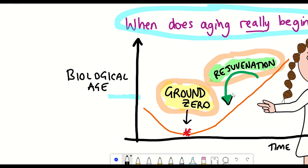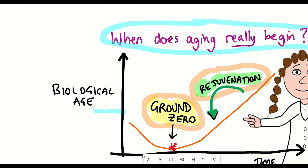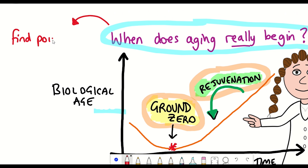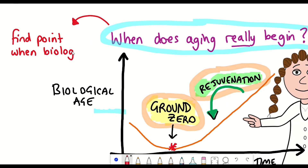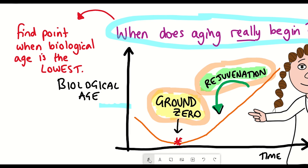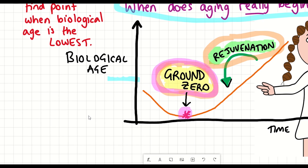What defines biological age is really a video of its own, but if we agree that biological age represents the percentage of ageing — and throw chronological age out of the window — then it's fair to say that if you want to know when ageing begins, you need to define at what point biological age is at its lowest. In this opinion piece, they define this lowest point as ground zero.